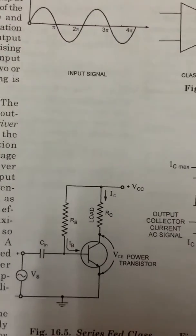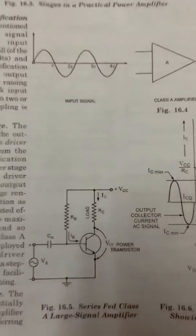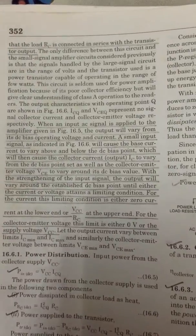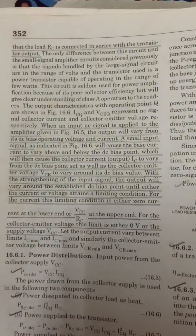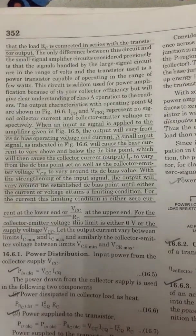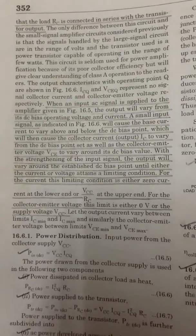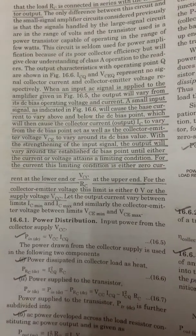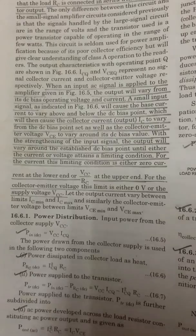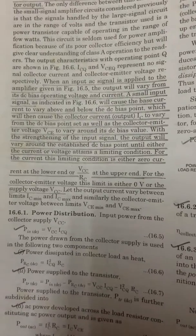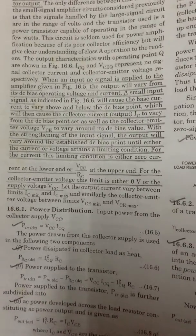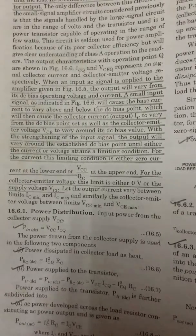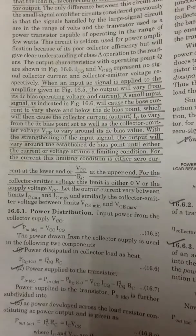The term 'series-fed' is derived from the fact that the load RC is connected in series with the transistor output. When an input AC signal is applied to the amplifier, the output will vary from its DC operating point, and a small input signal will cause the base current to vary above and below the DC bias point, which will then cause the collector current IC to vary from the DC bias point.